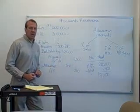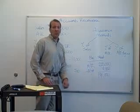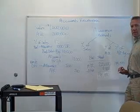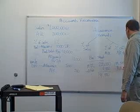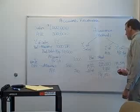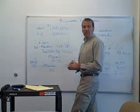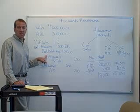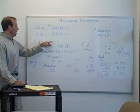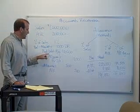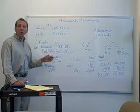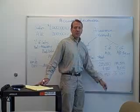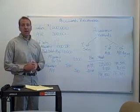Let's look at our balance sheet after this write-off. Nothing changes to our ending net number, because accounts receivable becomes $199,500 and our allowance becomes $8,500, so the overall impact on net accounts receivable is nothing. That makes perfect sense because the impact of that write-off really takes place in the prior year when we estimated the uncollectible amount at 1% of sales, which was $10,000. We recorded the expense last year; the write-off happens in the following year, and at that point basically nothing changes — it just reduces accounts receivable and the allowance by the same dollar amount.